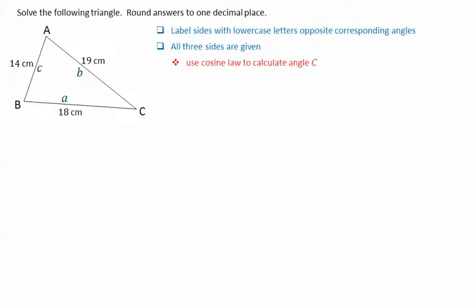When all three sides are given, we can use the cosine law to calculate any of the three angles. In this case, we're going to calculate angle C first. We can then use the cosine law a second time to calculate angle B. Note we could also have calculated angle A.